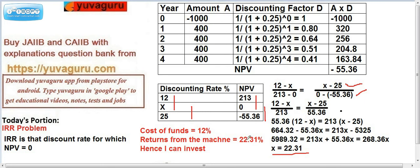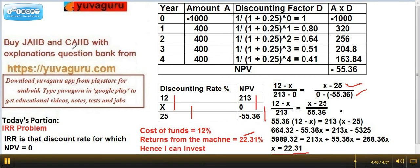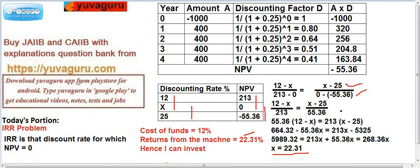We can invest as long as the IRR is 22.31%. Even if the cost of funds were 20%, we could still invest because we are getting more than that. This is the way we solve IRR problems. You can check out other videos and question banks with explanations on this site. Thanks.